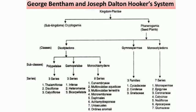Phanerogamia has been divided into three classes: class Dicotyledons, class Gymnospermia, and class Monocotyledons. So three classes — Dicot, Monocot, and Gymnosperms.